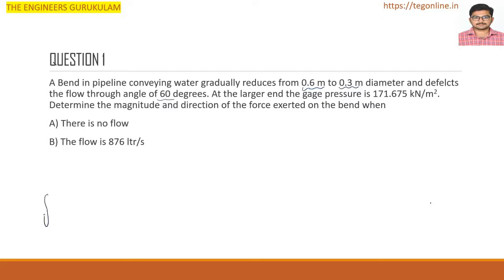Consider the center line of the pipeline. This is the straight flow entering the bend. The bend deflects the flow at 60 degrees, as shown in the diagram.